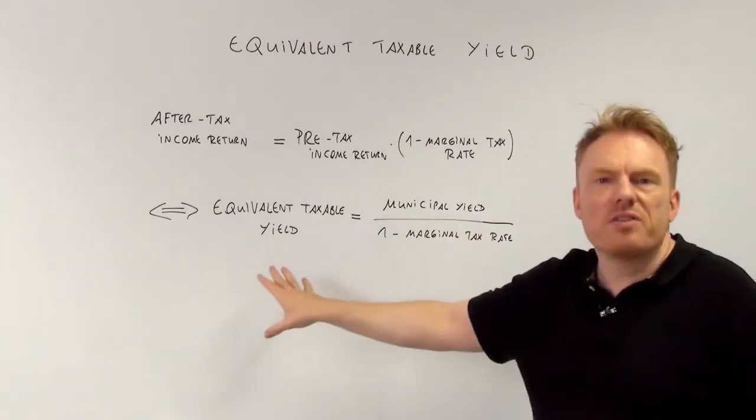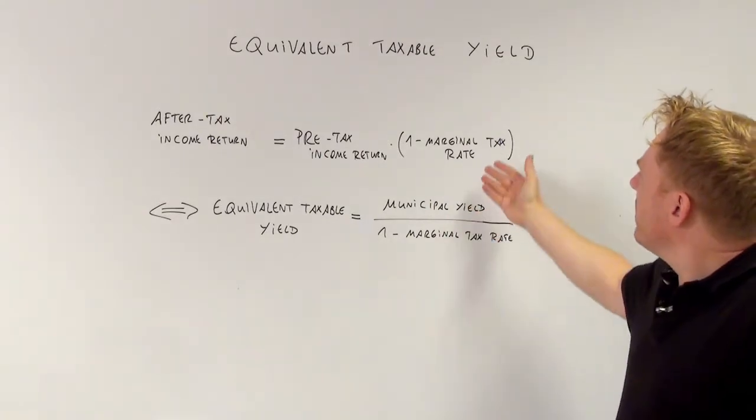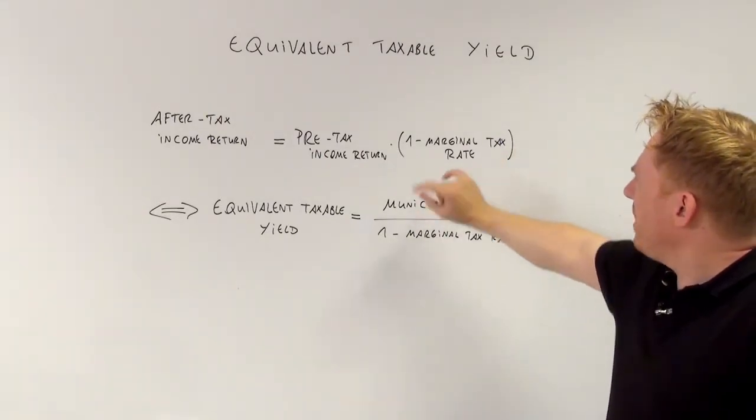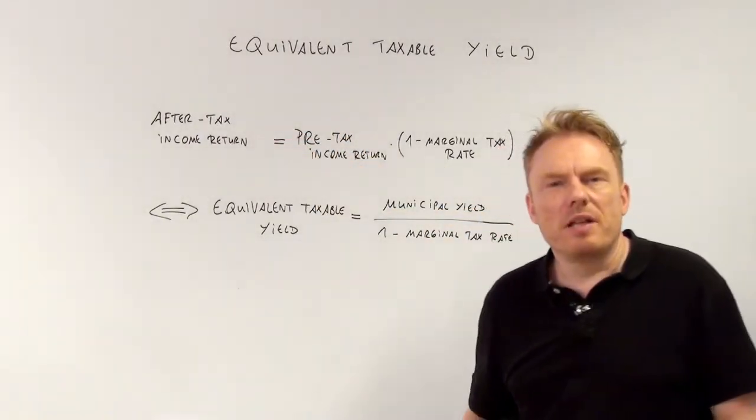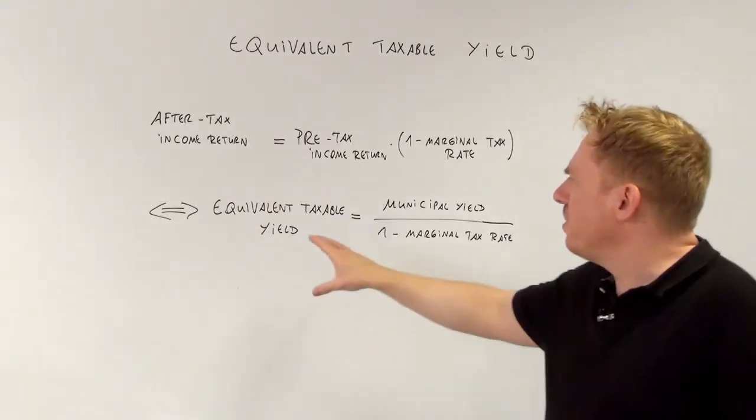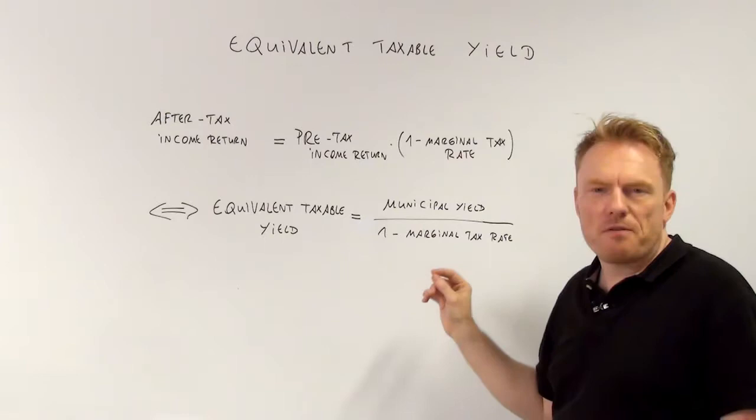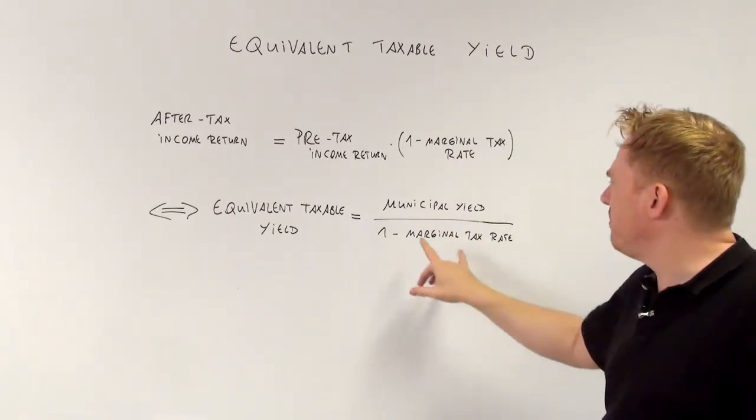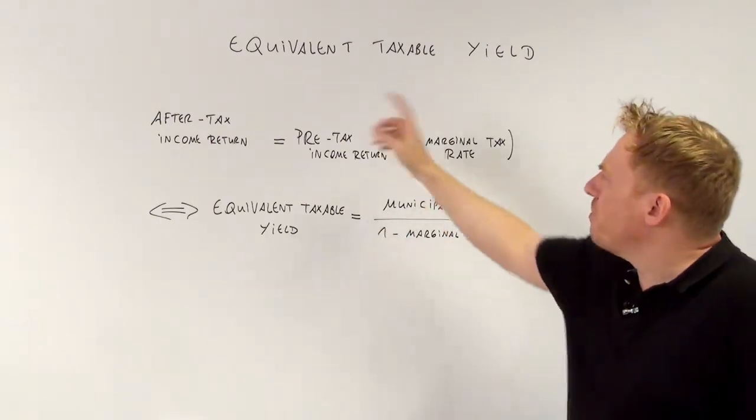And the answer is provided by dividing by this bracket. This gives us the formula: Equivalent taxable yield equals municipal yield divided by 1 minus marginal tax rate, which is just deduced from this formula.